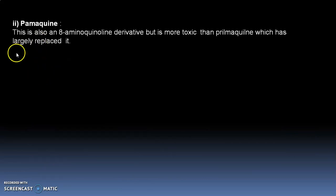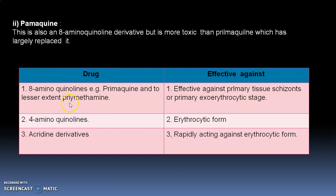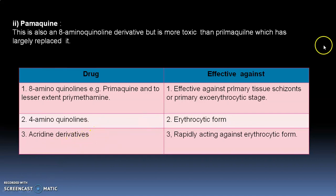Pamaquine is also an 8-aminoquinoline derivative but more toxic than primaquine, which has largely replaced it. To summarize the drug classification: 8-aminoquinoline derivatives — examples: primaquine and, to a lesser extent, pyrimethamine — are effective primarily against tissue schizonts or exo-erythrocytic stages. 4-aminoquinoline drugs are effective against the erythrocytic forms. Acridine derivatives are rapid-acting against erythrocytic forms.